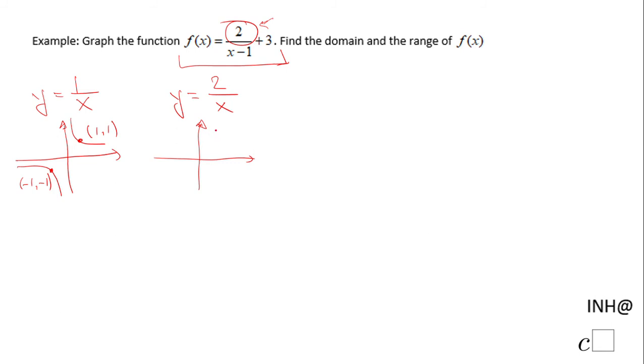So that 1 and 1 becomes 1 and 2, and negative 1 and negative 1 becomes negative 1 and negative 2. Other than that, the graph looks pretty similar. We're gonna have the same vertical and horizontal asymptote of x equals 0 and y equals 0.